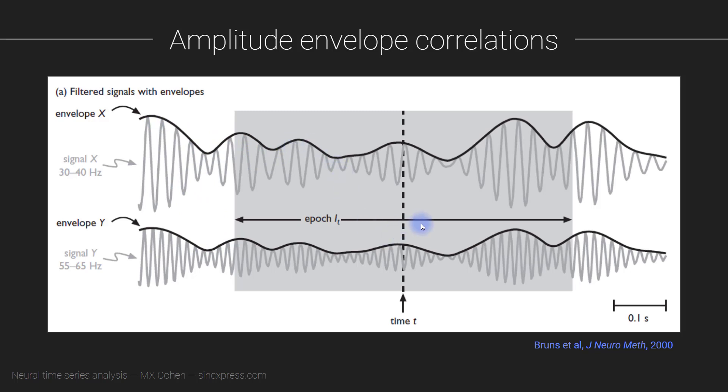Now one interesting aspect of amplitude envelope correlations, which is different from phase synchronization, is that here with amplitude envelope correlations you can actually have the two signals be at different dominant frequencies or different center frequencies. So here we are looking at a signal that was filtered from 30 to 40 hertz—so let's just call this 35 hertz—and here this is a signal that was filtered at 60 hertz.